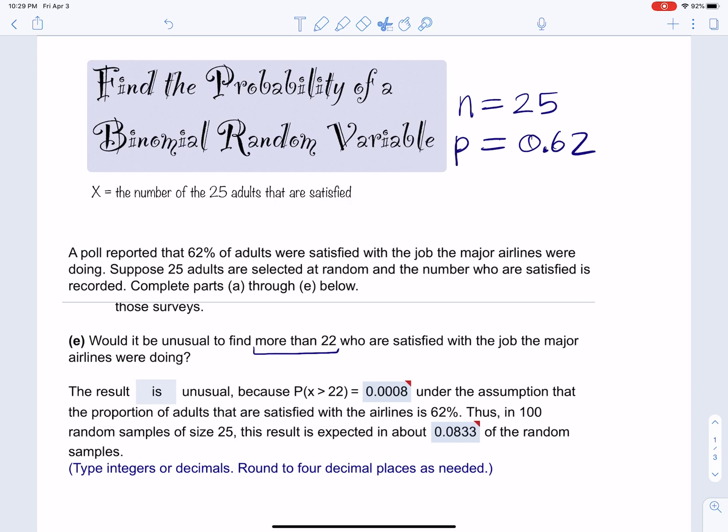So one thing that you need to realize is that X can take on some values. It can take on 0 to 25 because 0 people can be satisfied with the airlines or 25. All of them could be satisfied. So that's important to realize that this random variable takes on numerical values. Now, what is more than 22? So more than 22 is this. Does it include 22 or does it start at 23? You've got to pay attention to what more than means. So more than 22 means 23, 24, and 25.